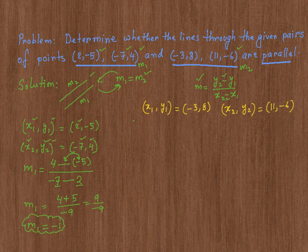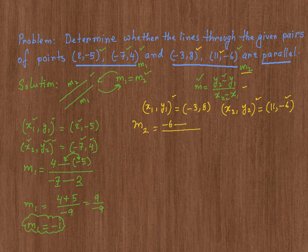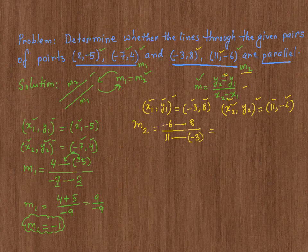Now we are going to find M2. I labeled this point as X1, Y1 and this point as X2, Y2. Again we are going to use this formula. My new slope M2 is equal to Y2 minus Y1: Y2 is negative 6, minus Y1, which is 8, divided by X2, which is 11, minus X1, which is negative 3 — and I'm going to put negative 3 inside the parentheses to avoid any confusion.